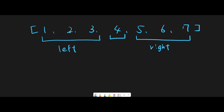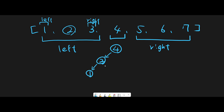In the left range 1, 2, 3, we do the same thing: pick the middle number, in this case 2. So 2 will be the root node of the left subtree. The left side of 2 is less than 2, which means 1 goes on the left and 3 goes on the right. So the left subtree of 4 is built with 2 as root, 1 as its left child, and 3 as its right child.